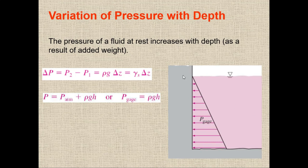If we have atmospheric pressure at the top surface, then: P = P_atm + ρgh gives the absolute pressure at depth h. If atmospheric pressure is not given, we compute P − P_atm = ρgh, which gives gauge pressure. So gauge pressure P_gauge = ρgh.